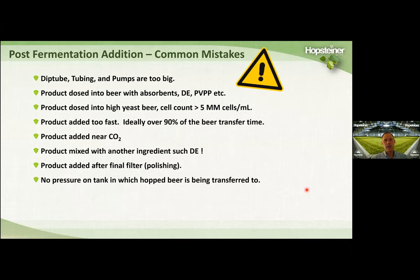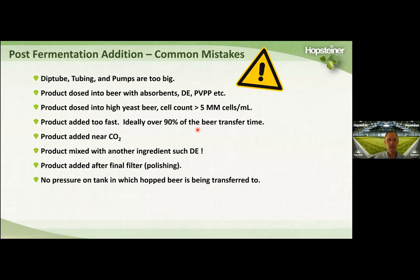Common mistakes I've seen doing trials with brewers post-fermentation: sometimes there's no dip tube, or the tubing is way too big, or the pumps are too big. Make sure you have a dip tube and you're using the right inner diameter and a nice small metering pump. Another mistake is dosing the product into beer containing absorbents like DE or PVPP — make sure the beer is clear and there are no absorbents present. Also make sure yeast counts are low — don't dose into beer with yeast counts over 5 million cells per mL. Add the beer ideally over 90% of the beer transfer time — don't add it too quickly.